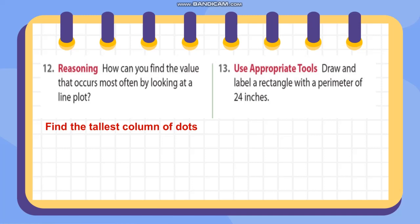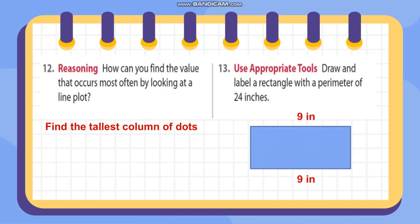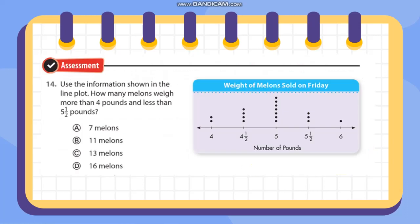Number 13: draw and label a rectangle with a perimeter of 24 inches. A sample answer uses side lengths of nine and three: nine plus nine plus three plus three equals 24. When we say perimeter, it means the total measurement of all the sides. Adding all sides — nine, nine, three, and three — gives 24 inches.